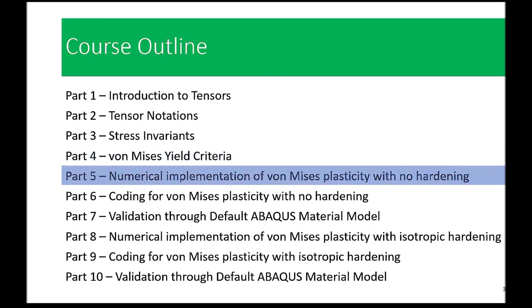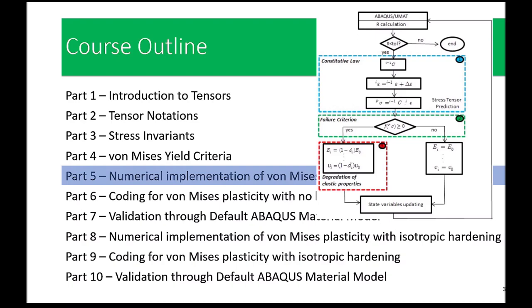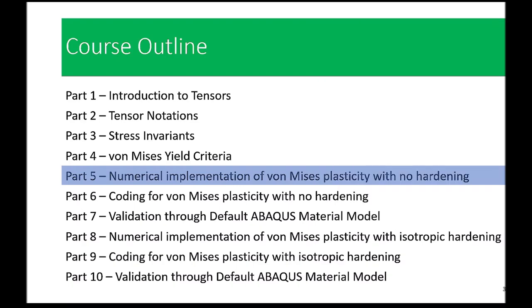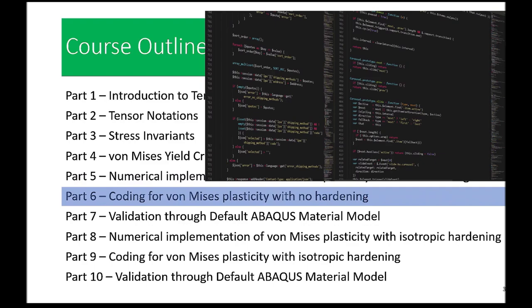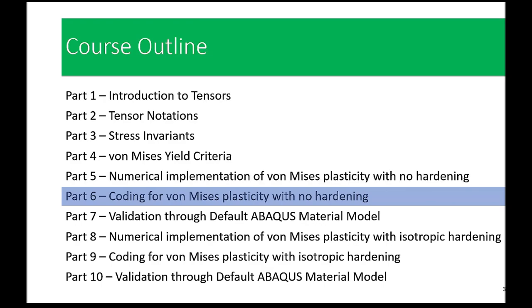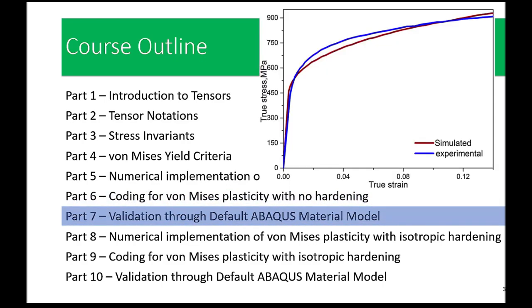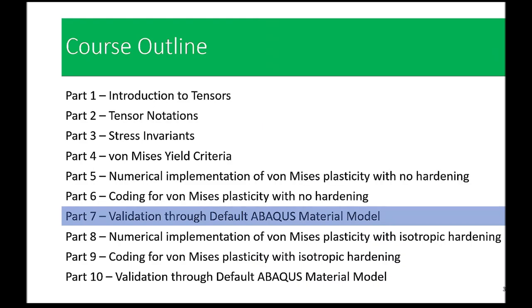Part five is where theory meets practice. We will demonstrate the numerical implementation of Von Mises plasticity with no hardening and get hands-on experience applying this theory in real-life scenarios. In part six we will take it further by diving into the coding of Von Mises plasticity, exploring the algorithms and steps involved. By the end of that section you will have a solid understanding of how to implement this in Abaqus. Part seven is all about validation, rigorously testing our implementation by comparing it with the default Abaqus material model.